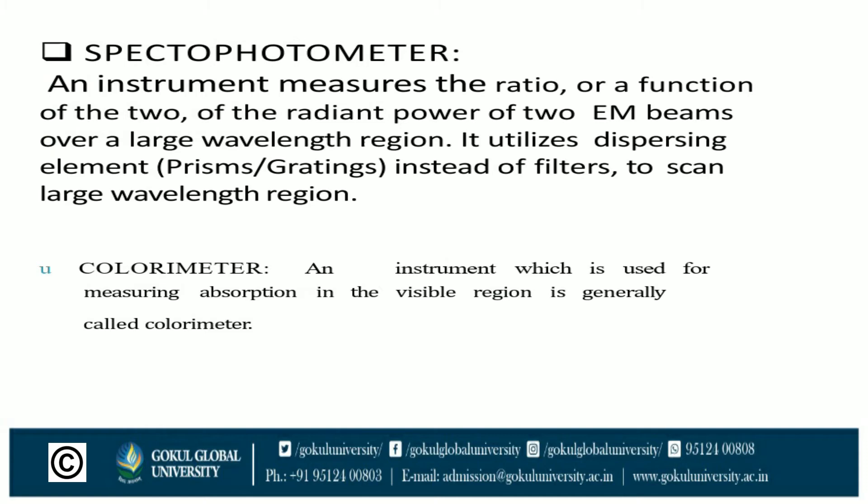A spectrophotometer is an instrument that measures the ratio or a function of two radiant powers of two electromagnetic beams over a large wavelength region. It utilizes dispersing elements like a prism or gratings instead of filters to scan large wavelength regions.